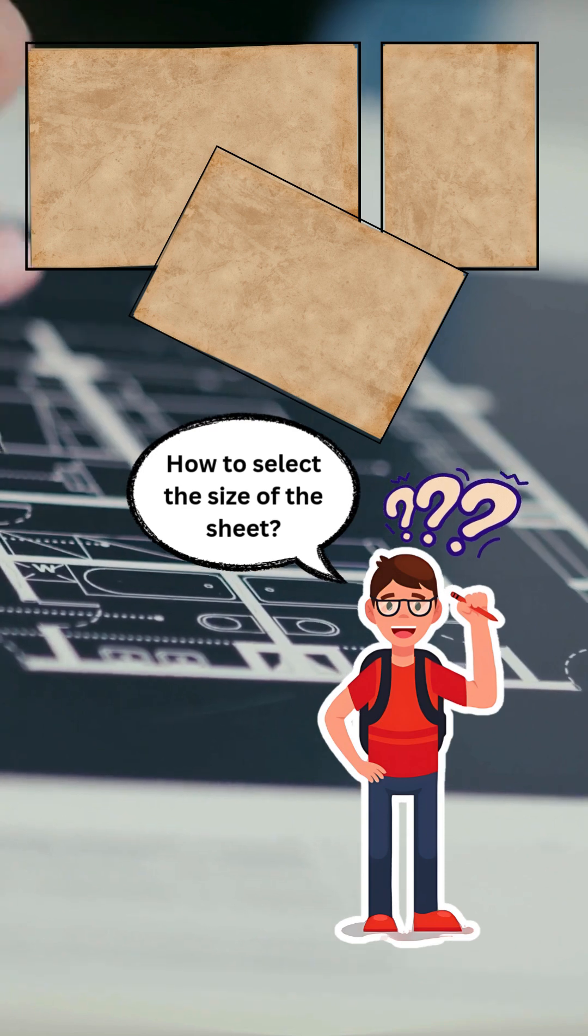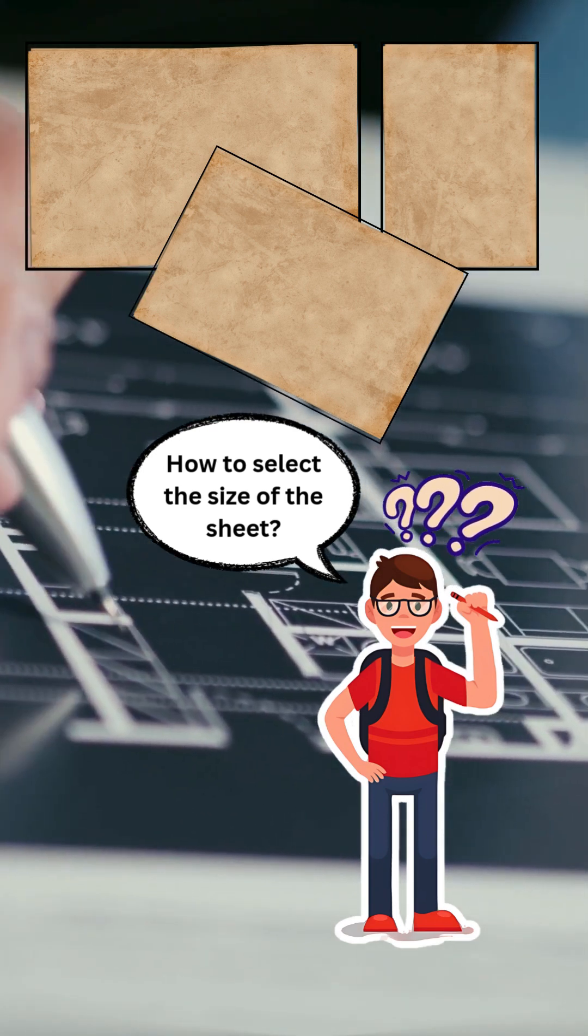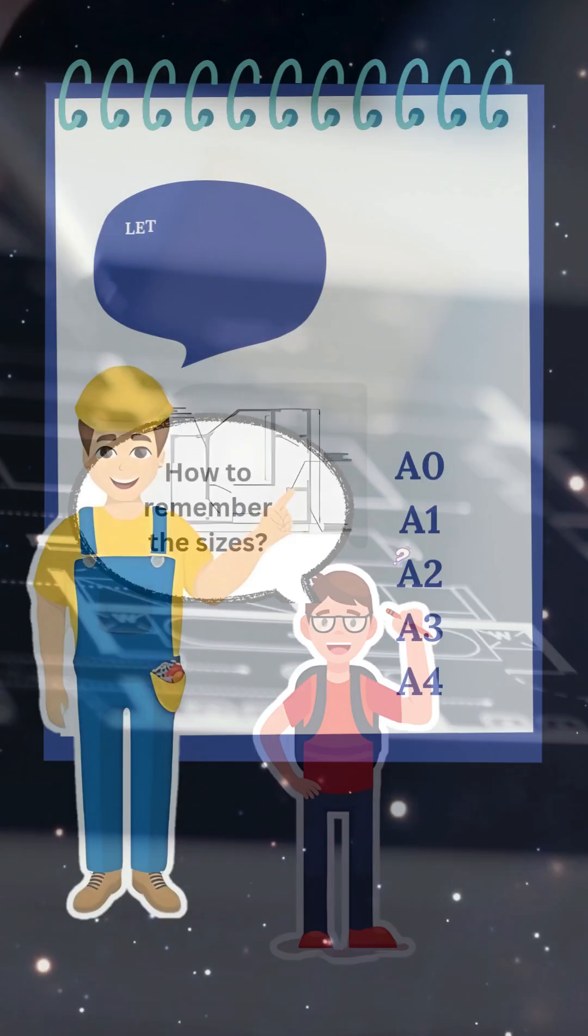So, Bob, I've got another question. You've explained the projections well, but what about the sizes? Like, how do you know what size paper to use? Is there an easy way to remember them?